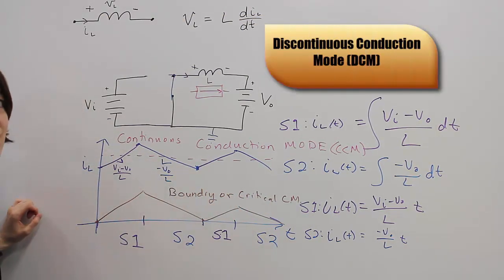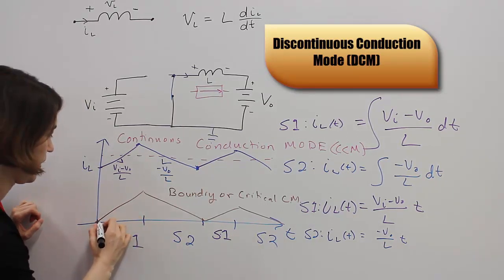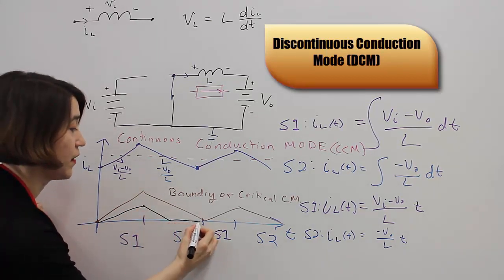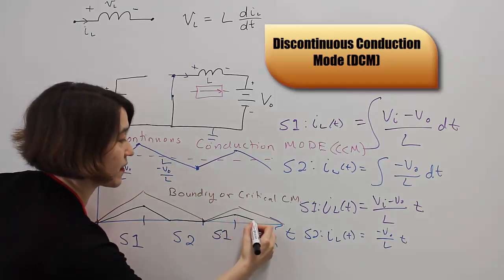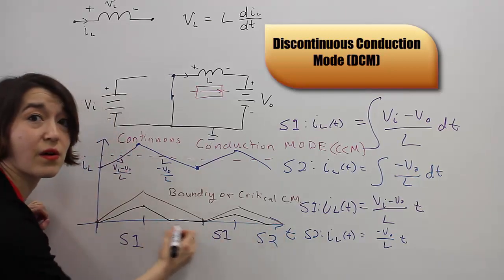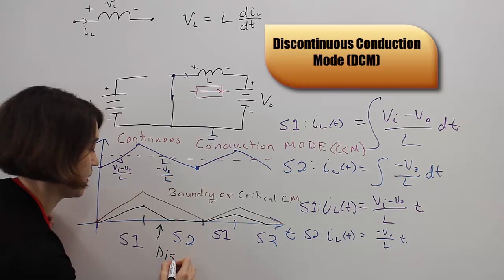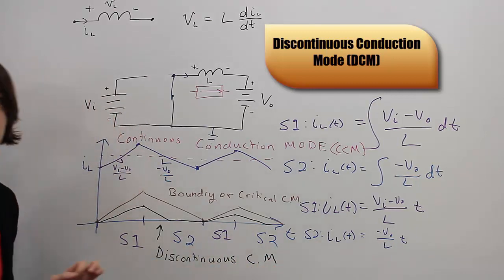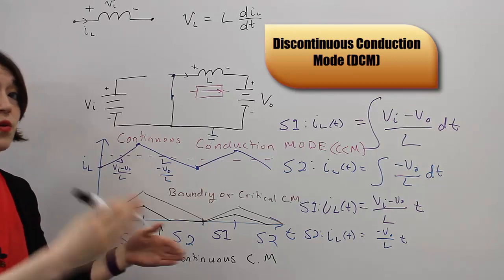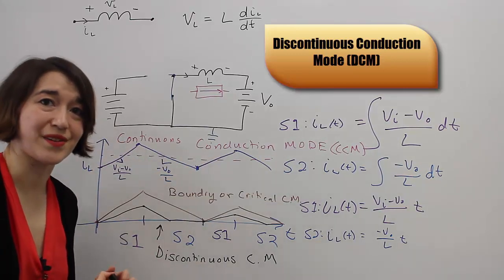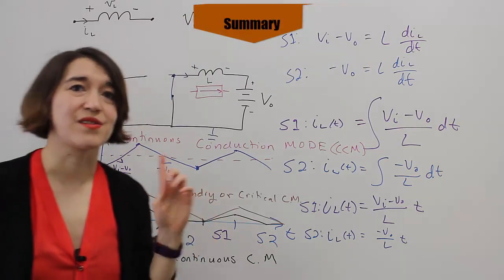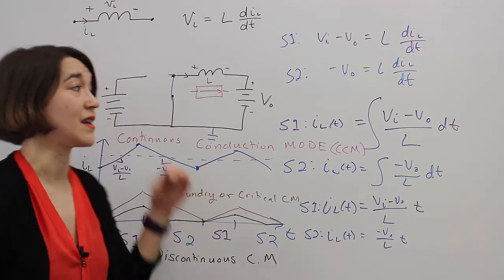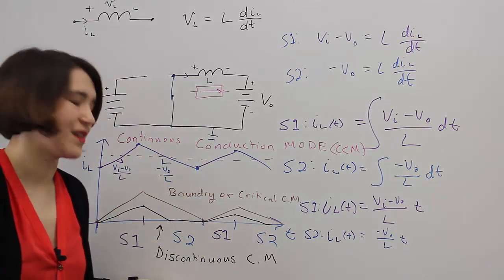The last mode is called discontinuous conduction mode. And that's when you have some value. The current actually goes to zero and will stay at zero during some portion of the waveform. So it'll go up during the positive part, but then hit zero, and you'll have this zero domain. This is called discontinuous conduction mode. The discontinuous part comes from the fact that it goes to zero and it's no longer continuously positive in one direction. So in short, the inductor is the most important component of a switch mode power supply, and you'll want to be aware of if the inductor is in continuous conduction mode, or boundary, or discontinuous conduction mode.